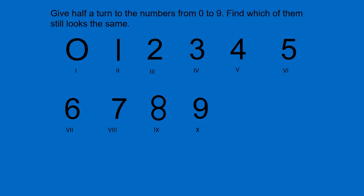Give half a turn to the numbers from 0 to 9 and find which of them still looks the same. Here the numbers from 0 to 9 are given. Let us check each number whether it looks the same after half a turn or not.